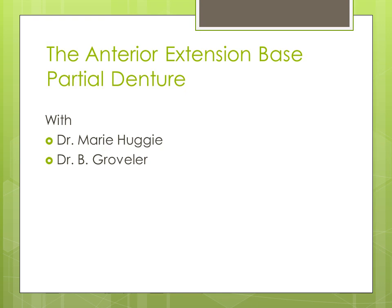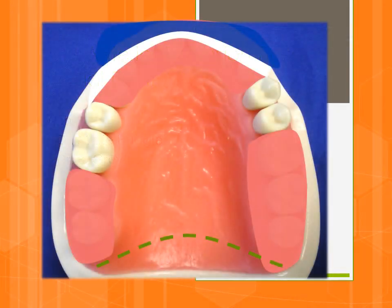Here is the arch in question. Our examination of the patient includes the following items: the periodontal condition of the remaining maxillary teeth is excellent, the patient has limited financial means, there are no interferences such as frenal attachments or bony undercuts, and the patient is not aesthetic conscious.